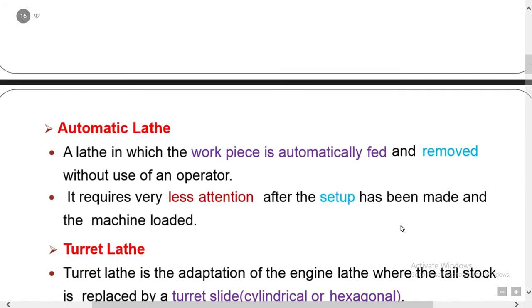Automatic lathe — in this lathe, all operations and all tool movements are automatic. Changing of tool speeds is also done automatically, and no participation of the operator is necessary during the operation. An operator may look after 5 or 6 automatic lathes at a time, simply handling general maintenance, loading bar stock, and removing finished products from time to time. It is called automatic lathe because without labor involvement, tool movements and feeding are all automatic.